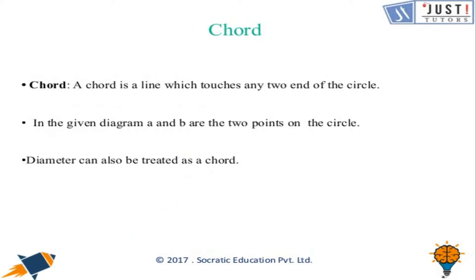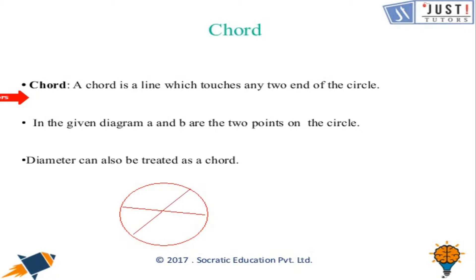Let's see what is a chord. A chord is a line which touches any two ends of the circle. That means diameter is also a chord. If this is the circle, this is also a chord, this is also a chord, and this is also a chord. So a chord is a line which touches any two ends of the circle, and the most important point is that the diameter is the biggest chord of the circle.